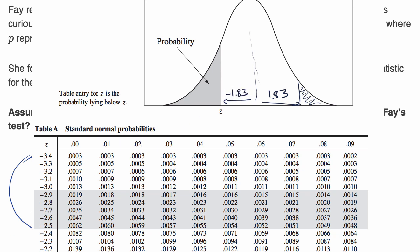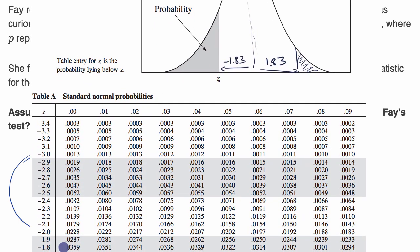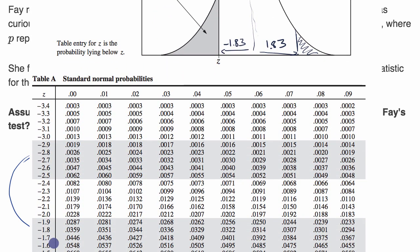And so we could look at that on this z-table right over here. Negative 1, negative 1.8, negative 1.83 is this right over here. So 0.0336. So there we have it.